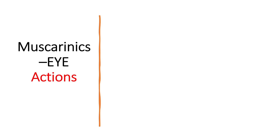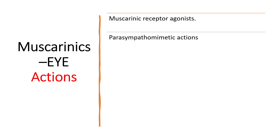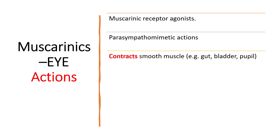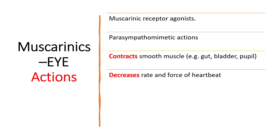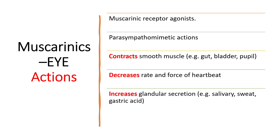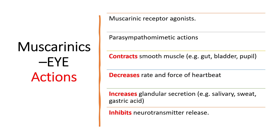Muscarinic receptor agonists have actions similar to parasympathomimetics. They contract smooth muscles — present in the gut, urinary bladder, and the pupil. They also decrease heart rate and force of contraction. In addition, these muscarinic receptor agonists increase glandular secretion, such as from salivary and sweat glands as well as gastric glands.